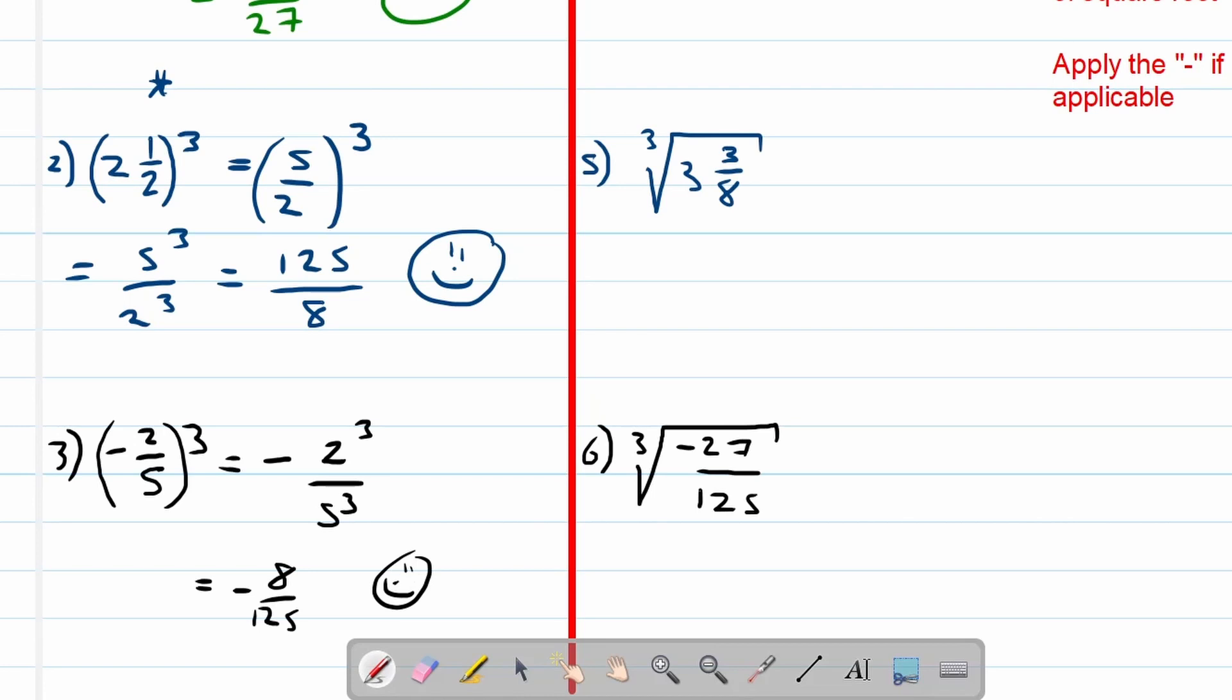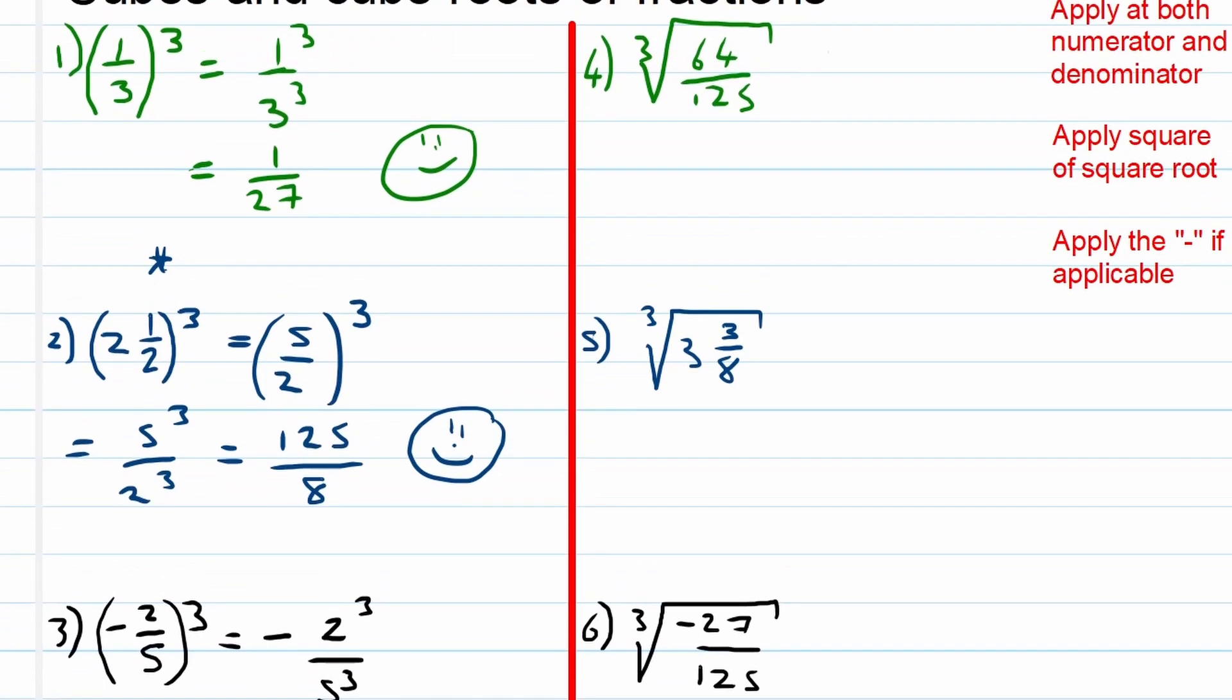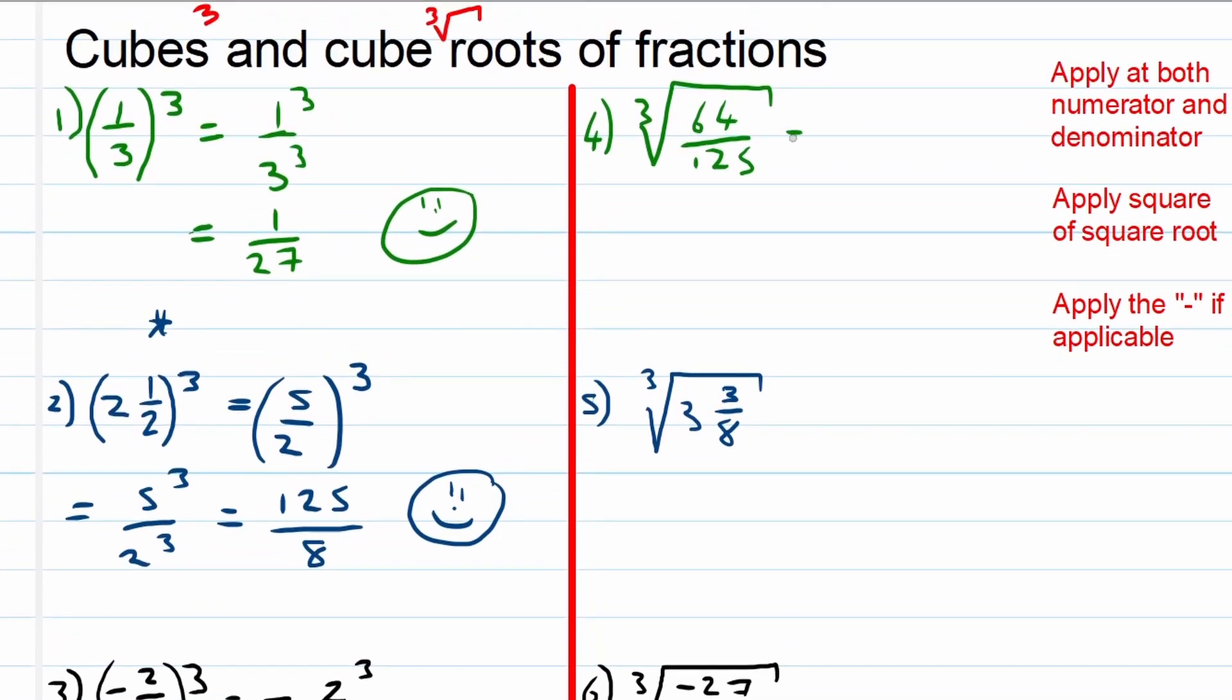Now let's move over to cube roots. Again, same rule apply: we apply the cube root to the numerator separately and the same for the denominator. So what's the cube root of 64? That is equal to 4. What's the cube root of 125? That is equal to 5, and we've done this one.